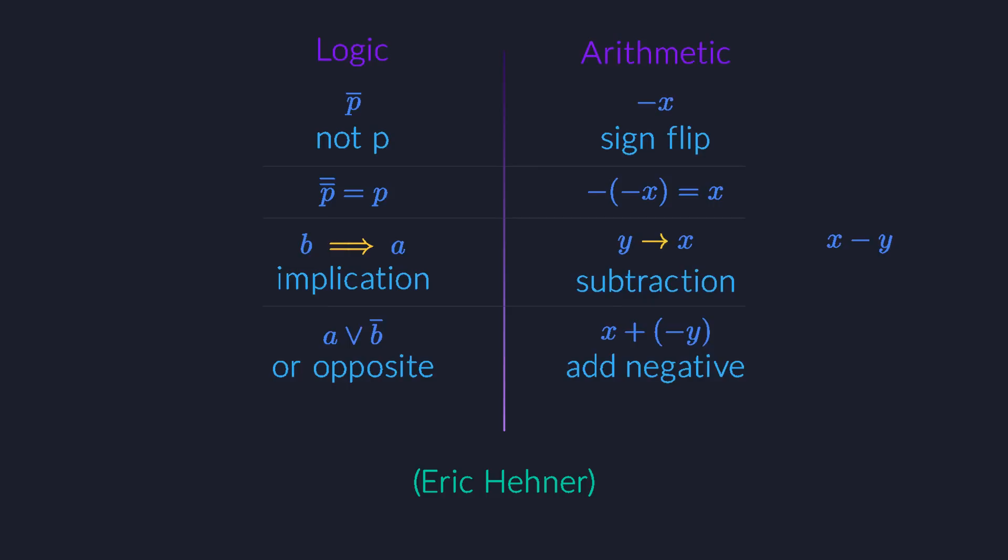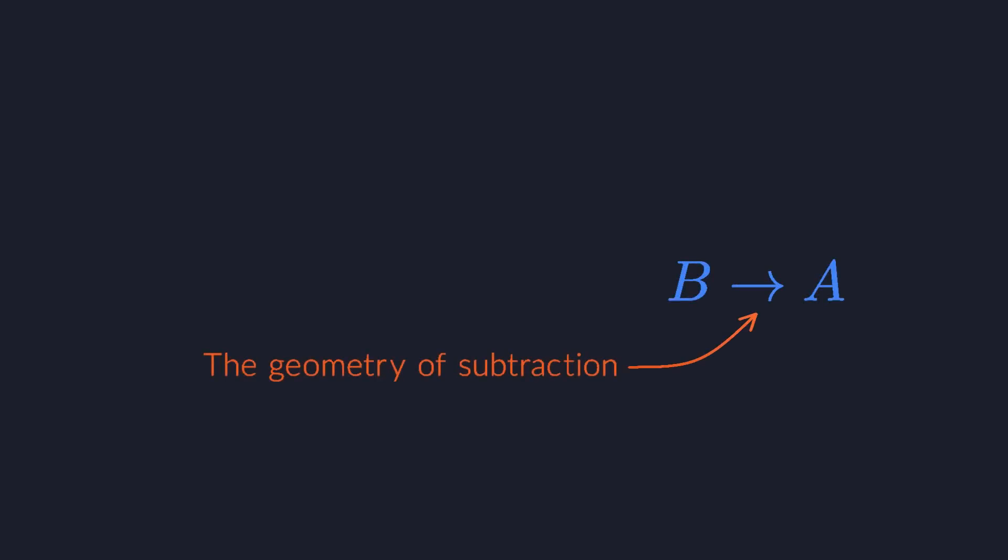But the main reason why this arrow is perfect is that it gives us a geometric representation for what happens when we perform subtraction. This complements the algebraic definition of subtraction I gave earlier.